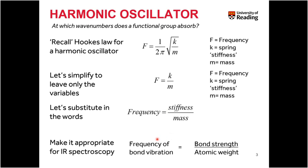The frequency of bond vibration is related to the bond strength divided by the atomic weight of the atoms on either side of the bond. When we have a stiffer spring — a higher bond strength — we get vibrations at a higher frequency or higher wavenumber. When we have a lower bond strength, such as a single bond instead of a double or triple bond, we get vibrations at a lower frequency or lower wavenumber.